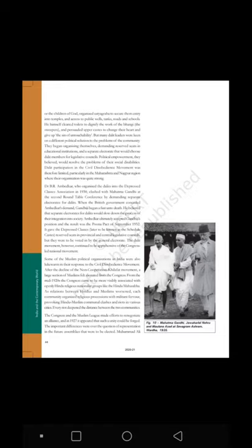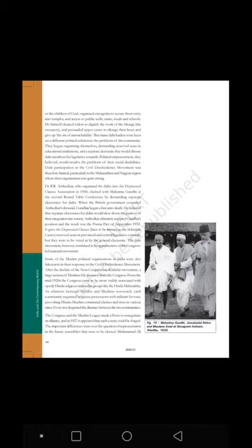Dr. B.R. Ambedkar, who organized the Dalits into the Depressed Classes Association in 1930, clashed with Mahatma Gandhi at the second Round Table Conference by demanding separate electorates for Dalits. When the British government considered Ambedkar's demand, Gandhiji began a fast unto death. He believed that separate electorates for Dalits would slow down the process of their integration into society. Ambedkar ultimately accepted Gandhiji's position and the result was the Poona Pact of September 1932, which gave the Depressed Classes reserved seats in provincial and central legislative councils, but they were to be voted in by the general electorate. The Dalit movement, however, continued to be apprehensive of the Congress-led national movement.